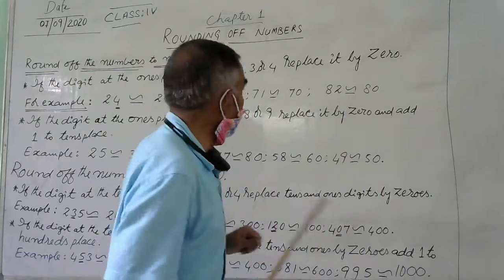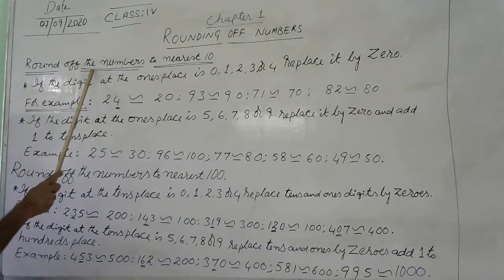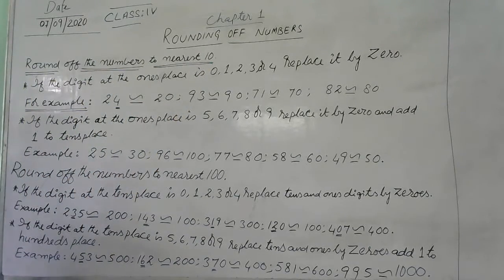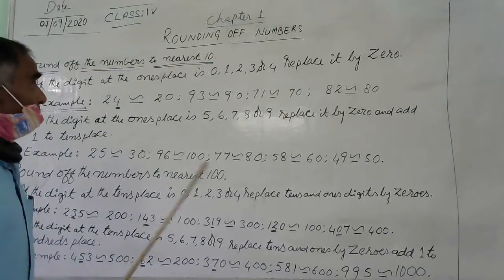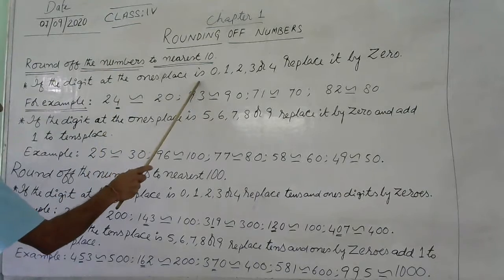But then also you see that the rounding of numbers, round off the numbers to nearest 10th, nearest 10th when the number is, nearest 10th. Here you see that if the digit at the one's place is.